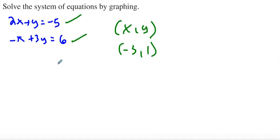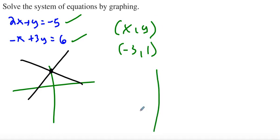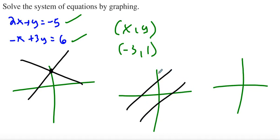We have three different cases when we graph two lines. They can intersect at one point, but you also have two other cases where they never intersect—where they're parallel.